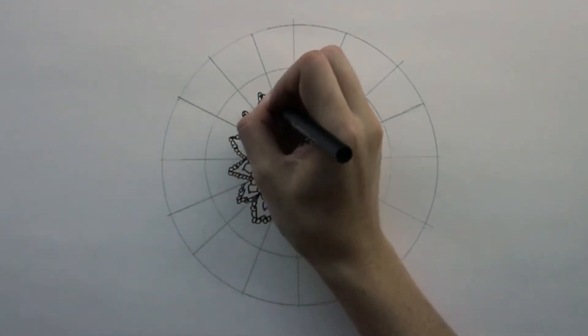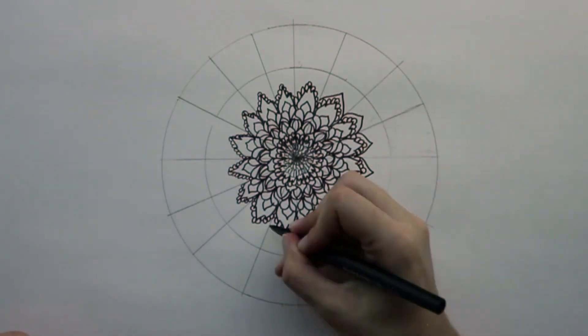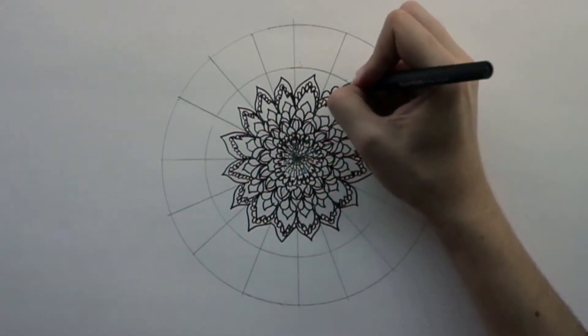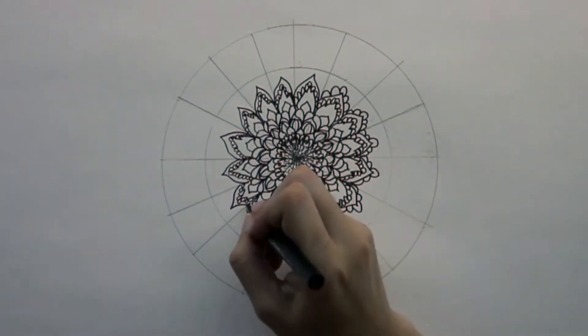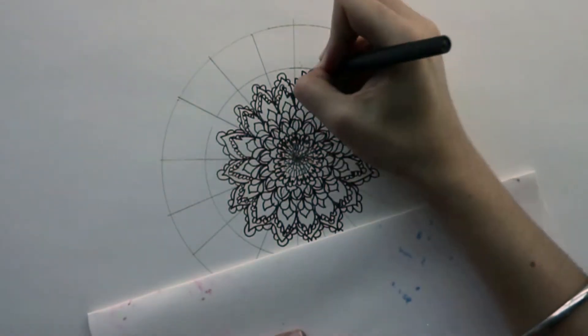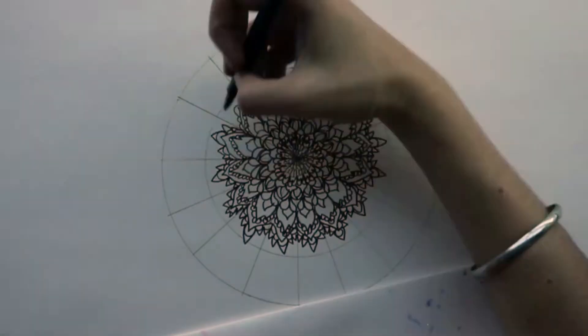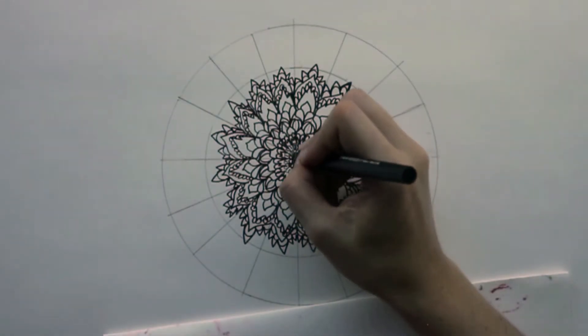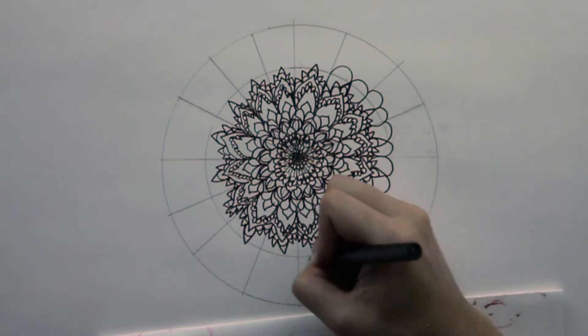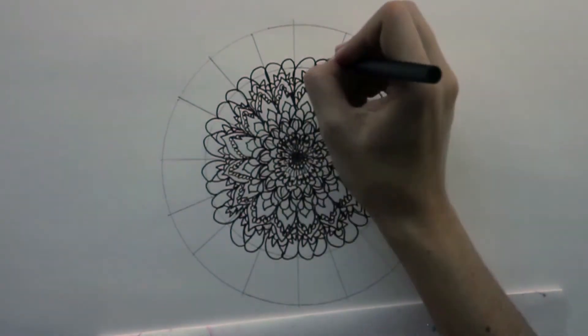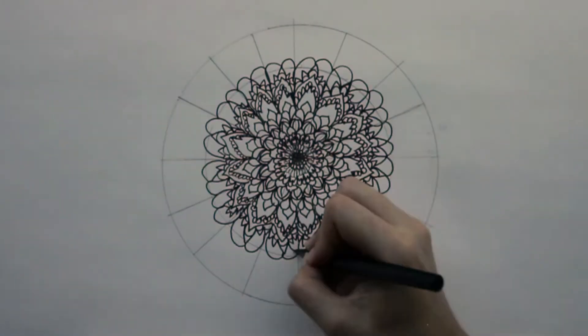Don't worry if your mandala is not perfectly symmetrical. Our objective here is not to achieve perfection but to slow down and be kind to ourselves. To create this video I also got a bit frustrated trying to create a perfectly symmetrical piece and I decided to accept that it's not possible. Remember that in nature nothing is really symmetrical.